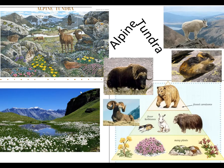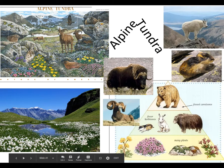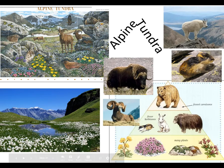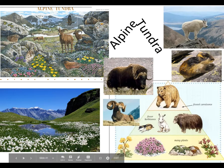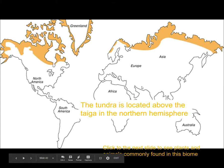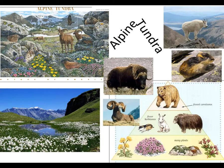I remember hiking on Mount Elbert — as I went up, the trees started thinning out more and more around halfway up. Eventually there were fewer and fewer trees until we passed the last tree, and the rest of the hike looked just like alpine tundra: beautiful views, beautiful flowers, but no trees at all. You can write down these examples of plants and animals found in the alpine tundra biome.